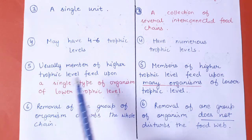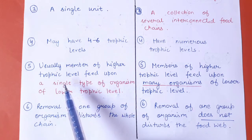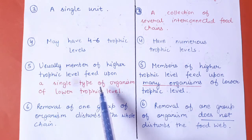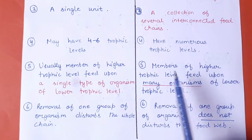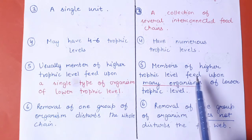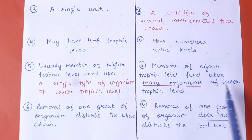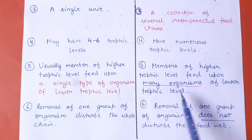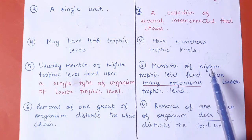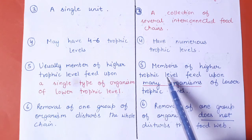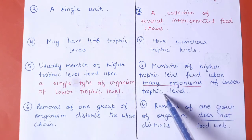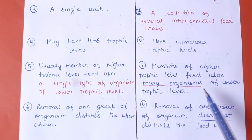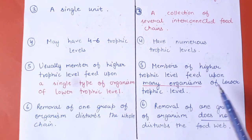In a food chain, an organism at a higher trophic level has only one option to feed on organisms at the lower trophic level — there is no choice. But in a food web, members of higher trophic levels can feed upon many organisms of lower trophic levels, giving animals many choices.